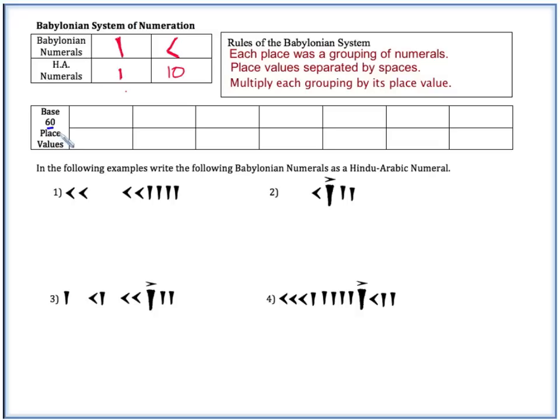So what that means for us is that way over here, anything on the right is going to be 60 to the 0 power, or your ones column. And then if we're following the place value system of a base, 60 to the 1st will be your next one. So the next place is 60. They figured they could count all the way up to 60, and then that would have to be a new grouping.